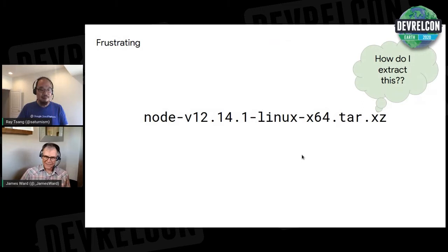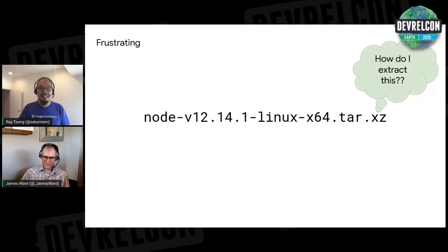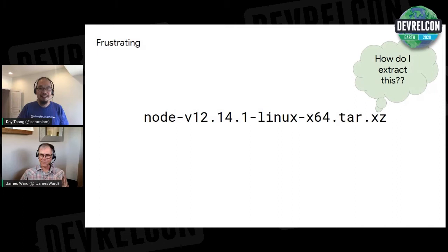Here's a frustrating developer experience I had recently. I downloaded the latest version of Node for Linux, and it gave me a tar.xz file. I don't know what an xz file is or how to extract it. A Google Trends search showed that when they switched from tar.gz to xz, many more people started searching for how to extract an xz file. It's something I do so infrequently that every time I need to extract the latest Node, I have to look up the command line.